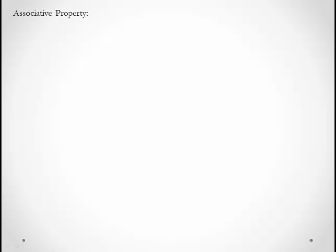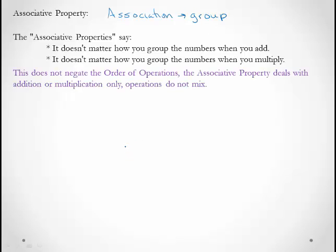The associative property says that it doesn't matter how we group the numbers when we add or multiply. If you think of the word associative, that comes from the word association — an association is a group. It does not negate the order of operations. The associative property deals with addition or multiplication only. Operations don't mix. So if I have only addition, it doesn't matter which groups I do first. Or if I have only multiplication, it doesn't matter which group I do first.